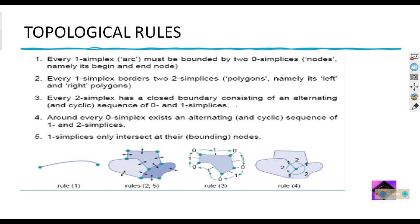There are five topological rules that come from mathematics. First, every one-simplex (a line or arc) must be bounded by two zero-simplexes (points). Second, every one-simplex borders two two-simplexes (polygons). So: zero means point or node, one means line or arc, and two means polygon.